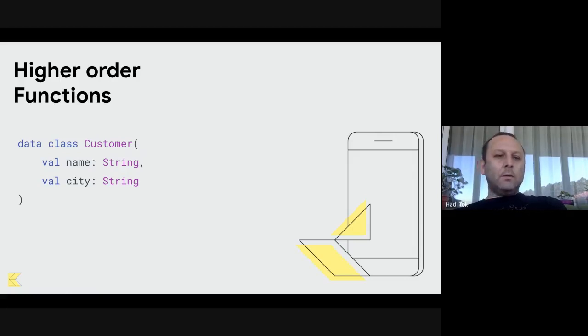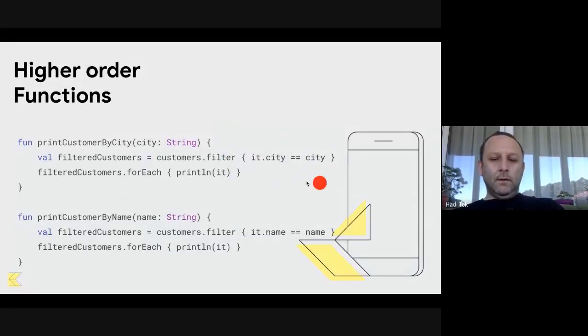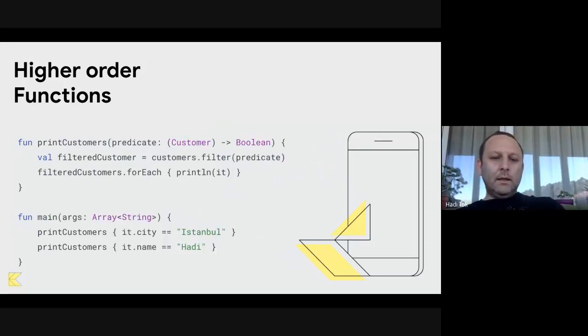The second area where higher-order functions are used is changing or specifying a behavior of a function. Let's say we have a customer object like this, a customer class with name and city properties. If we want to filter it and print it, we would need two functions to do this job. These two functions look identical. The only different thing is the condition that we are doing the filter with. With Kotlin we can pass it as a parameter called predicate. It defines what is the condition that a filter would run. We pass this predicate to filter and we can print the filtered list. In the first call here we are filtering customers by city, and in the second one we are filtering it by name.